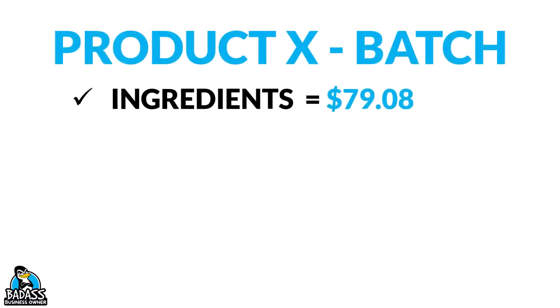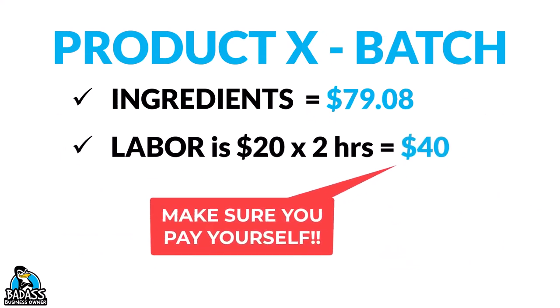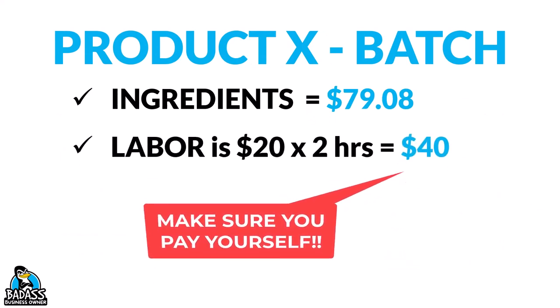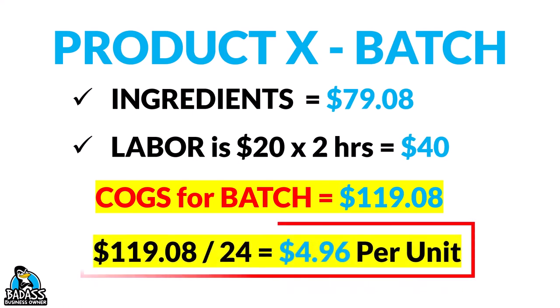But hold on — remember, we also have labor. We need to add those two labor hours at $20 an hour, which is $40. So the total cost for this batch is $119.08. And because there are 24 units in a batch, we divide $119.08 by 24, which gives us $4.96. So the cost of goods per unit is $4.96.